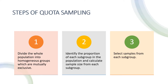The first step is to divide the whole population into homogeneous groups which are mutually exclusive. The second step is to identify the proportion of each subgroup in the population, and then calculate the sample size from each subgroup. The third step is to select samples from each subgroup. Let me explain these steps through an example.